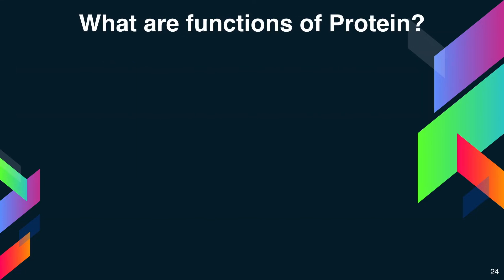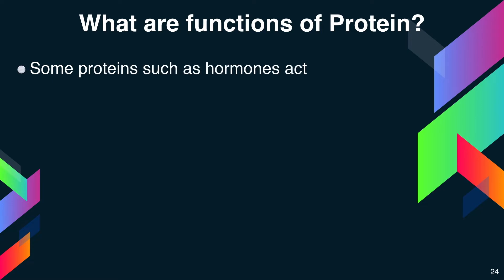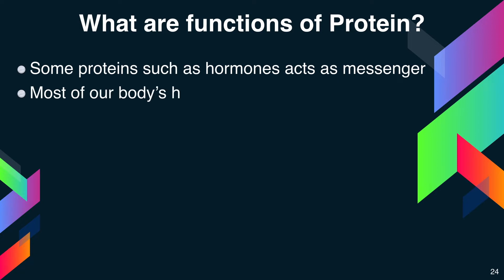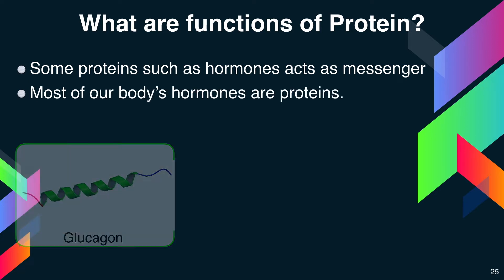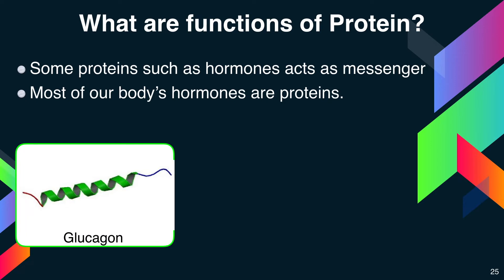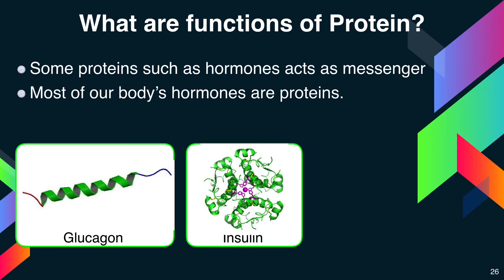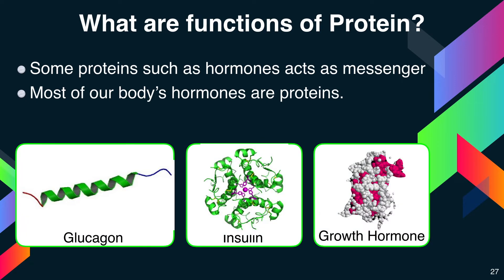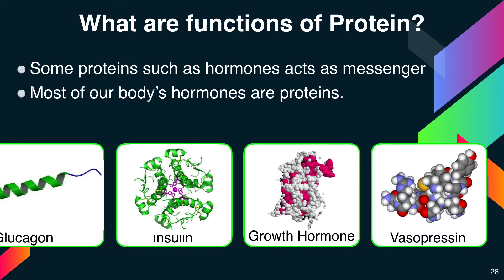Some proteins such as hormones act as messengers. Most of our body hormones are proteins. Examples include glucagon, insulin, human growth hormone, antidiuretic hormone, and adrenocorticotropic hormone.